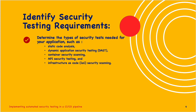First, identify security testing requirements. Determine the type of security tests needed for your applications, such as static code analysis, dynamic application security testing, container security scanning, API security testing, and infrastructure as code security scanning. This process ensures that code changes are quickly and reliably delivered to the production environment, and it is essential to incorporate automated security testing by integrating security scanning tools into the CI/CD pipeline.